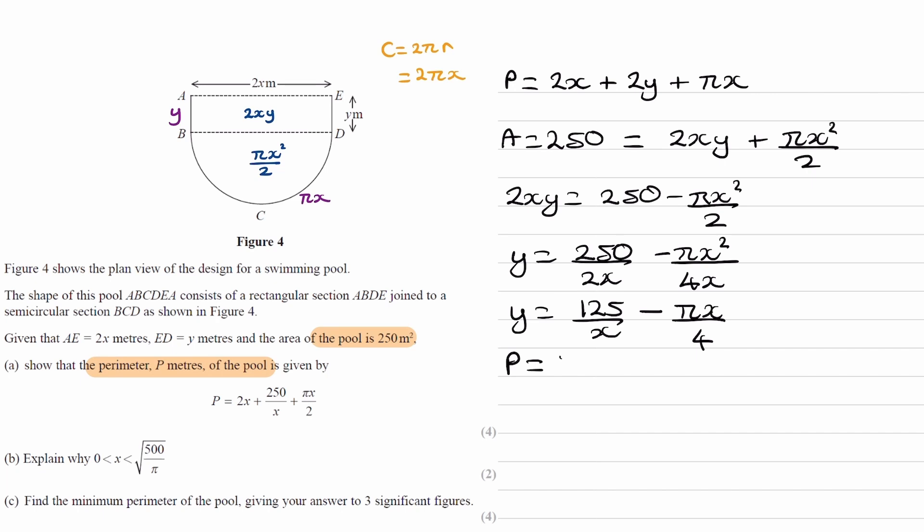We can then put this into our perimeter equation. Replace the y that we have here with this. The perimeter then becomes 2x + 2 lots of 125/x - πx/4 + πx. We can then expand this out. 2 times 125 is 250. 2 times the second term minus πx/2 + πx on the end. And then just simplify. 2x + 250/x. The last two terms, π - π/2, will give us π/2.